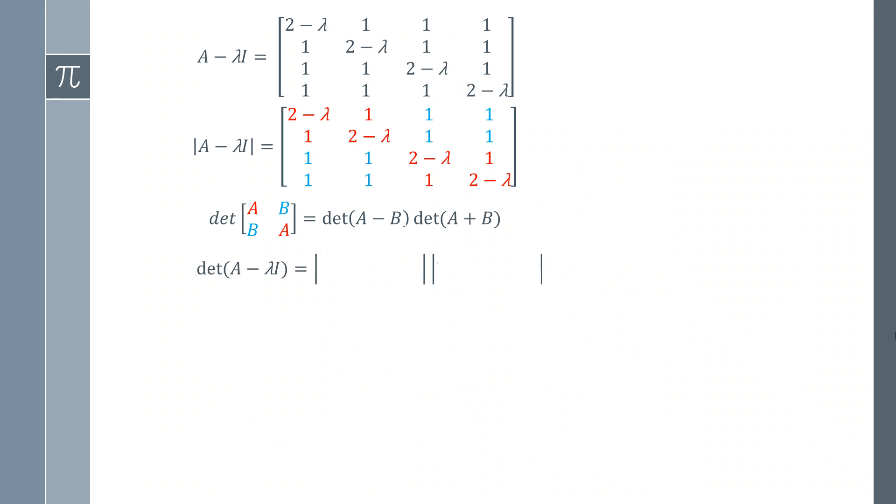Let's work out what this is. We're going to do the difference between the two matrices. So we're doing each element. Two minus lambda minus one gives you one minus lambda. One minus one gives you zero. Then one minus one gives zero and the two minus lambda minus one we get that.